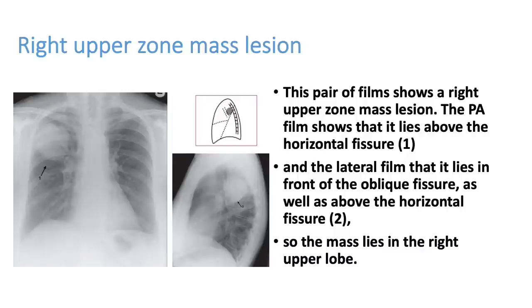This x-ray shows a lesion on the right upper zone — a round, homogeneous white opacity that looks like a mass. Mass, consolidation, fluid, and collapse are all white in color. We cannot tell it is in the upper lobe on PA view, but the lateral view shows it is in the upper lobe, above both the horizontal and oblique fissures. It can be a mass or sometimes a round pneumonia.